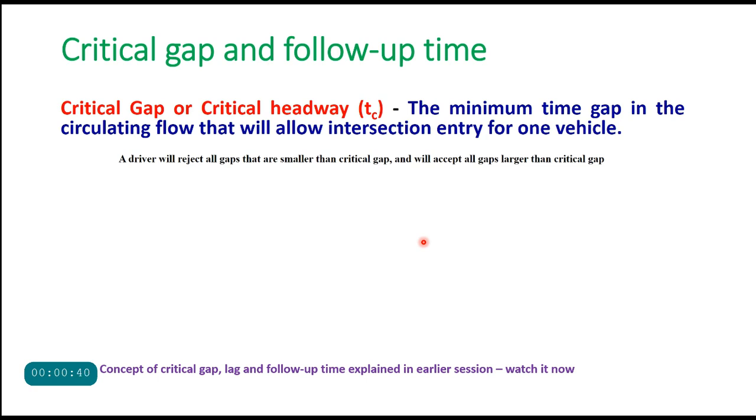In reference to roundabouts, the critical gap or critical headway is the minimum time gap in the circulating flow that will allow intersection entry for one vehicle. A driver will reject all gaps that are smaller than critical gap and will accept all gaps which are larger than critical gap.